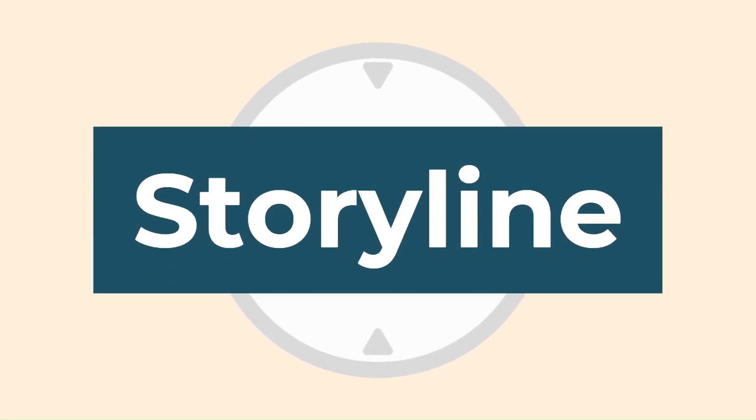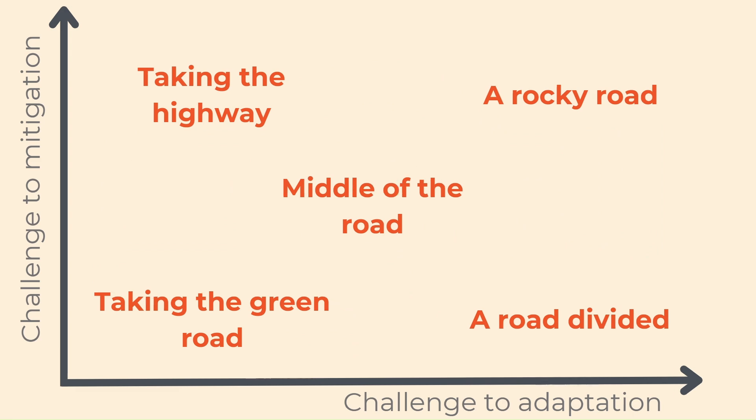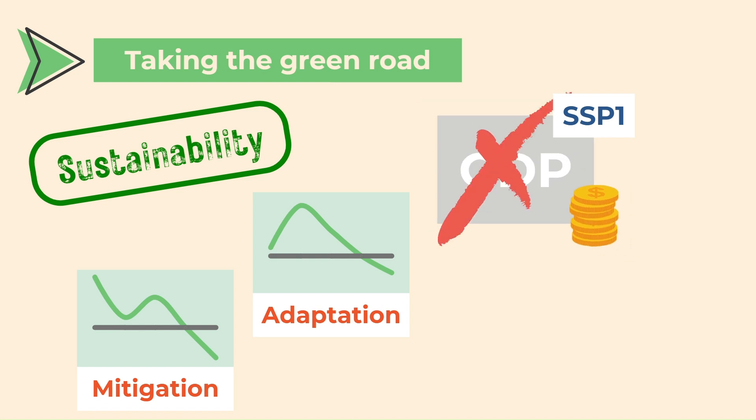Each one of these scenarios is developed to describe its future. It's a storyline. Also, they are each given a name that is more descriptive than the number. SSP1, or taking the green road, has low challenges to mitigation and adaptation in 2100. It is based on sustainability. GDP is no longer the focus of development and is replaced by the pursuit of well-being.